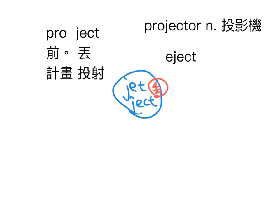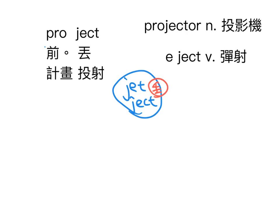接下来EJECT这个字非常好理解，就是弹射。E就是OUT，出去，JEC就是丢，把东西丢出去就是弹射。